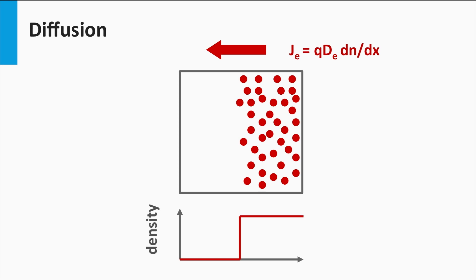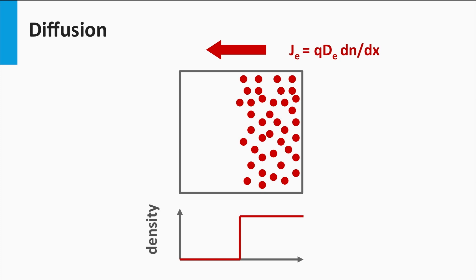The net movement of particles induced by density gradients is called diffusion, and it can be described by Fick's law of diffusion. Here, J_e is the electron current density expressed in current per area, q is the elementary charge, D is the diffusion coefficient of the electrons, and dn/dx represents the density gradient in direction x. The diffusion of electrons results in net movement toward locations with lower electron densities, and diffusion persists as long as a density gradient exists.